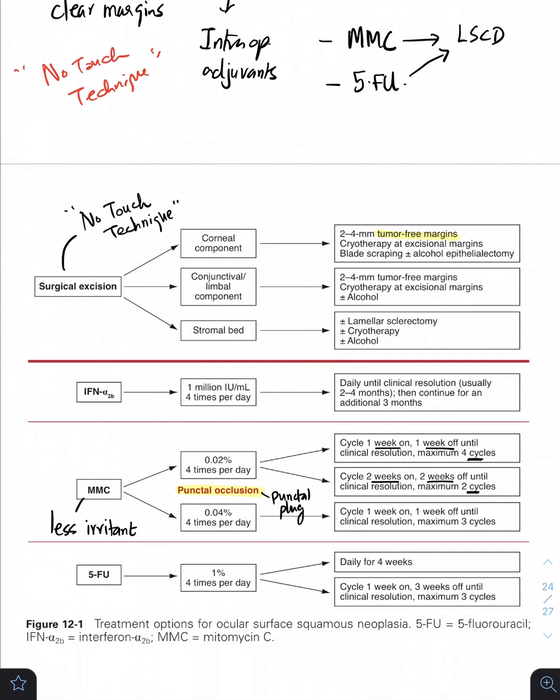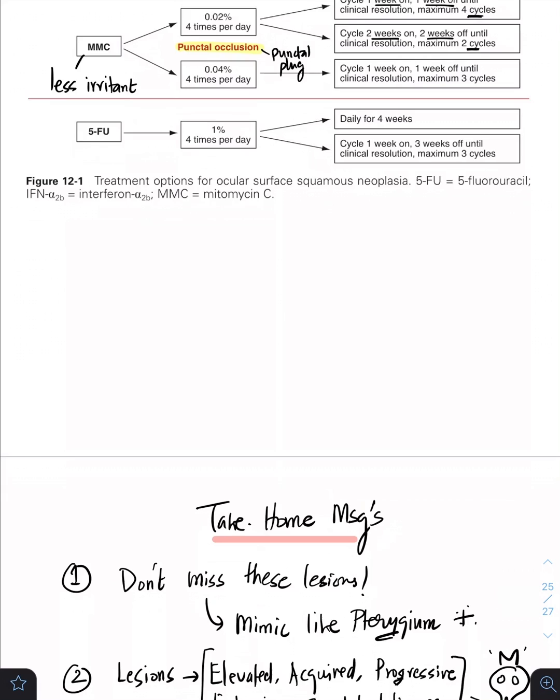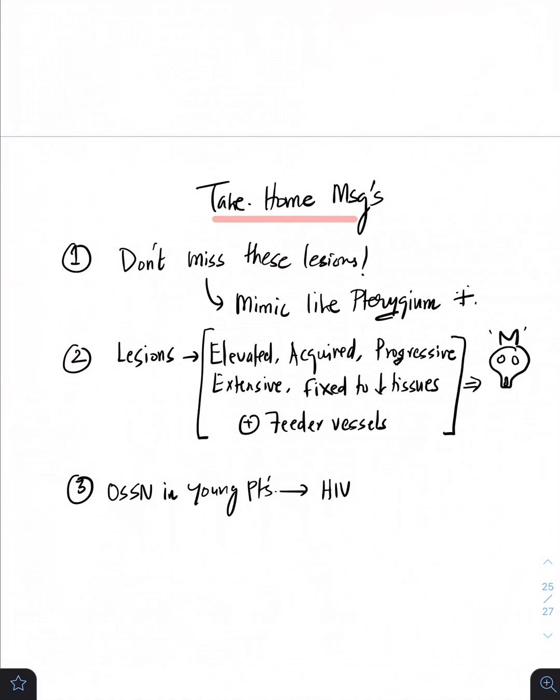So what is the important message I want to give to you guys? Never miss these lesions in the OPD because most often you will see patients coming to you with pterygium, very easy to identify as pterygium, but sometimes atypical pterygium pictures. If the pterygium is going to be large, irregular, elevated, think of OSSN. Have a high degree of suspicion in these patients. So never miss these lesions, that's the most important message I want to give.